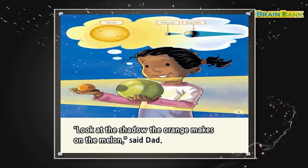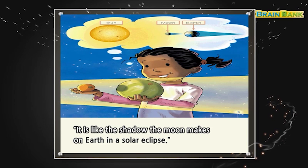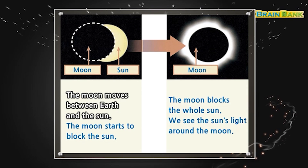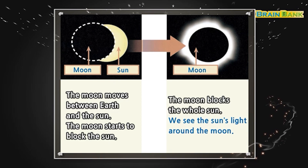It is like the shadow the orange makes on the melon, said Dad. It is like the shadow the moon makes on Earth in a solar eclipse. The moon moves between Earth and the sun. The moon starts to block the sun. The moon blocks the whole sun. We see the sun's light around the moon.